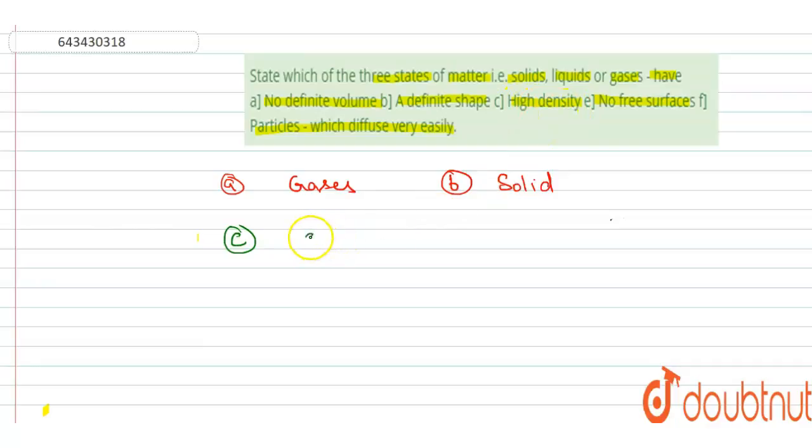So C part is high density. So basically solid possess high density as compared to gas and liquid. Now we move on fourth statement D.